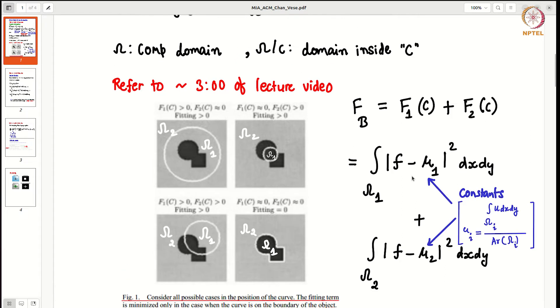Here you can see intuitively in the first figure, in omega 2 all the pixels have same value, same as the average, that is why F2C is almost equal to 0. But here in omega 1 this will not be the case, because the average will be different from the individual pixels.